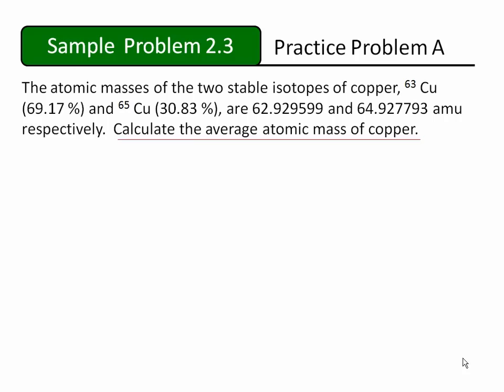Let's see what information we have here. We know that there are two isotopes to work with. We know the percent abundance of each isotope, and we know a very precise mass of each isotope in AMUs.